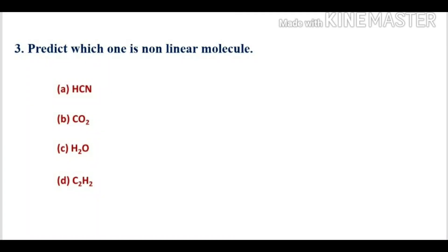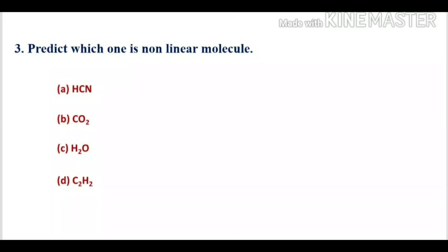HCN, CO2, and C2H2 — hydrogen cyanide, carbon dioxide, and acetylene — are all linear molecules with SP hybridization. Only H2O is SP3 hybridized with two lone pairs, so it is tetrahedral and non-linear. The correct option is C.